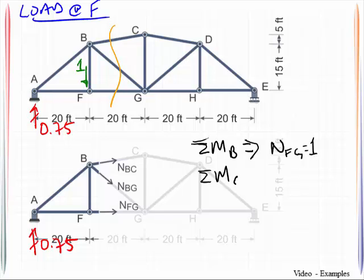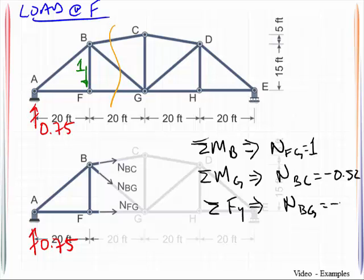Sum moments about G, that will give me NBC is equal to negative 0.52. And then I will sum forces in the Y, and that will give me NBG equal to negative 0.63. Those will only work out as long as you make sure that you have that unit load here on your free body diagram that was cut.